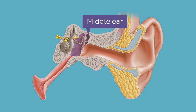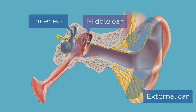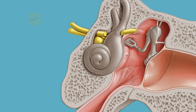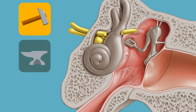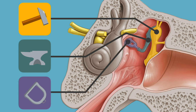The middle ear is an air-filled cavity found between the external and inner ears. The hammer, anvil, and stirrup — also known in medical language as malleus, incus, and stapes respectively — are the three smallest bones of the human body.